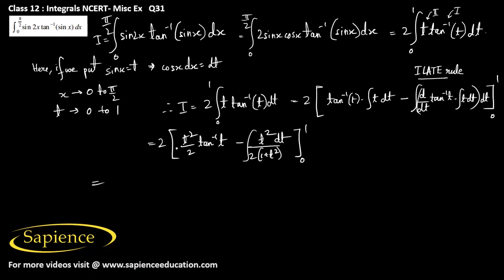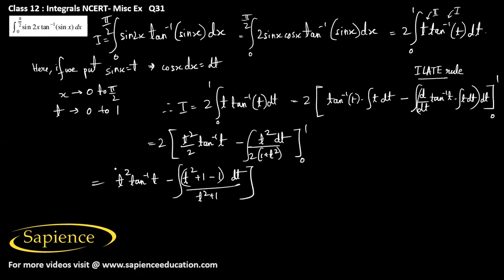The factor of 2 and the 1/2 cancel to give 1. We can rewrite t²/(2(1+t²)) by writing t² as (t²+1−1), so the integrand becomes (t²+1−1)/(t²+1) = 1 − 1/(t²+1). So we have: t²·tan⁻¹(t) − ∫(1 − 1/(t²+1)) dt, from 0 to 1.